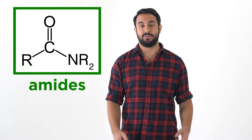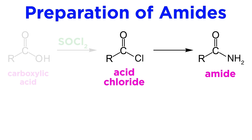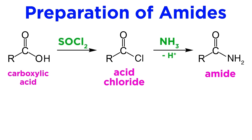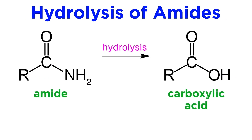Let's do a quick survey. Most commonly, amides are prepared from acid chlorides. Since these are so reactive, ammonia, as well as primary and secondary amines, can attack the carbonyl and kick off the chlorine, yielding an amide once deprotonation occurs. Since acid chlorides are easily prepared from carboxylic acids using SOCl2, amides are easy to prepare from the more common carboxylic acids as well.